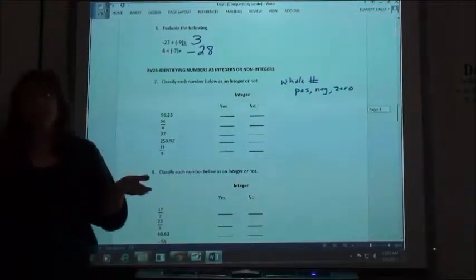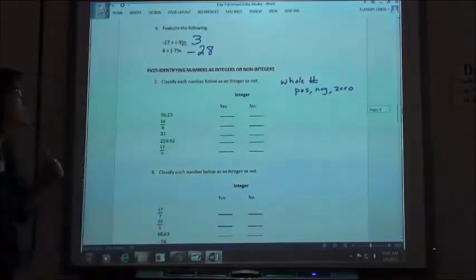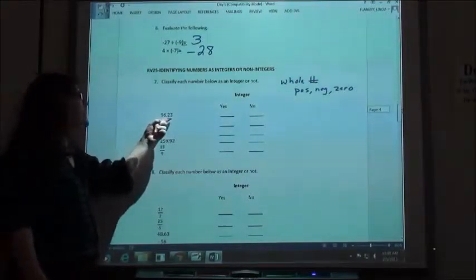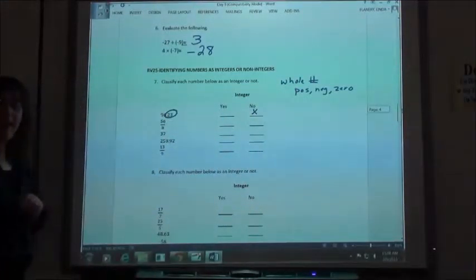Integer means they could be positive or negative, or it could be zero, but it can't have that decimal or fraction at the end. So 96.23 is not going to be an integer because it has that decimal at the end.